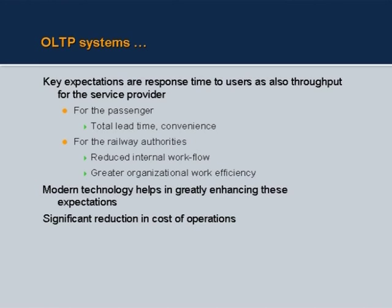For the passenger it is total lead time and convenience; for the railway authorities it is reduced internal work flow and greater organisational efficiency. Significant reduction in cost of operation is expected. If you book a ticket at a railway station versus on the internet, you can see the time and cost reduction for you, and for railways they simply eliminate the need for a clerk posted to serve you around the clock.